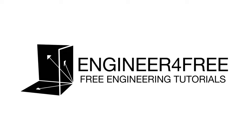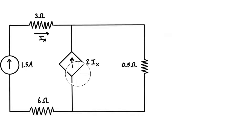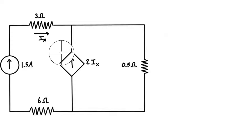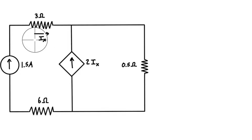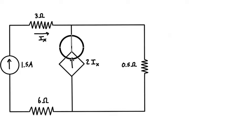We have a quick example with a current-controlled current source. It has a diamond shape — the shape of a dependent power source — whereas the circle shape means it's an independent source. The dependent power source here is going to put out a current that is two times ix, where ix is the current flowing through this resistor. ix is what we call the controlling current, and the current out of this power source is the dependent current. All we need to do is figure out what this current is and then we can proceed with the problem.